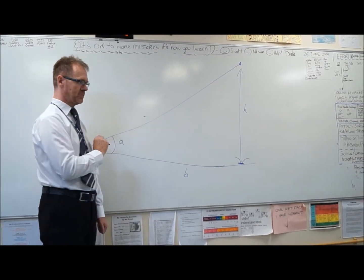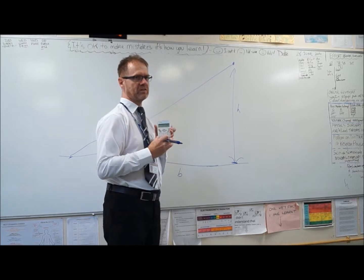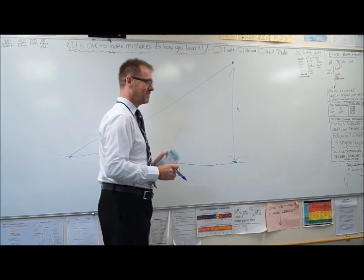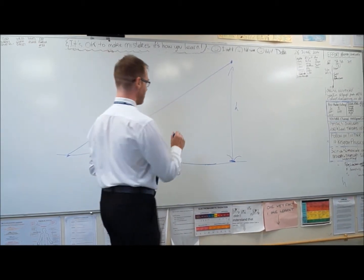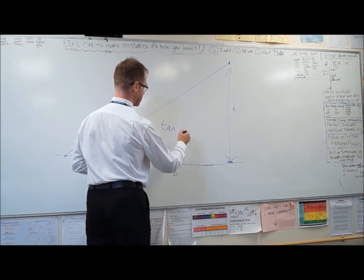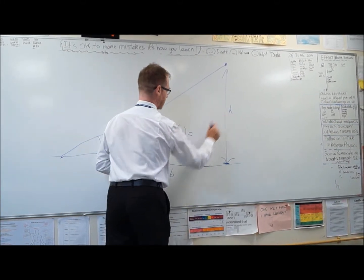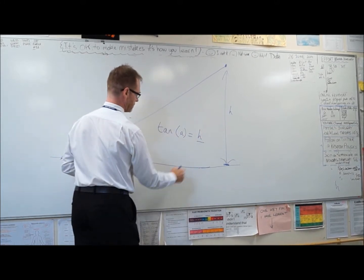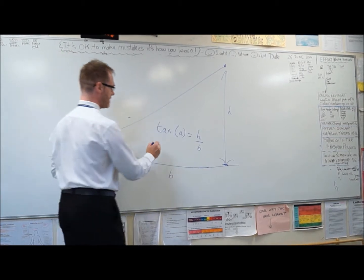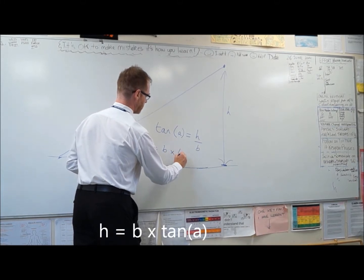If I know this angle, then on the calculator there's a button you might have seen on calculators called tan. Has anybody seen that before? It's got nothing to do with going to the beach. When you calculate the tan or tangent of an angle, that is defined as this length here, the height, divided by this length here, the base. If I do some quick maths, I can rearrange this to say that the height equals the base times the tan of that angle.